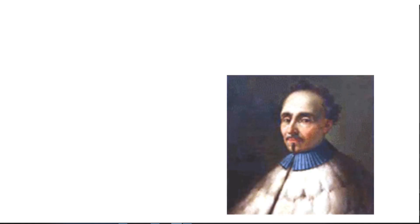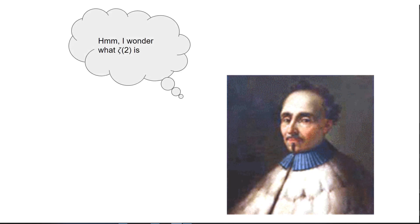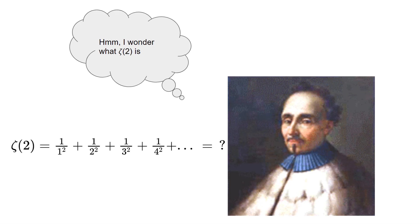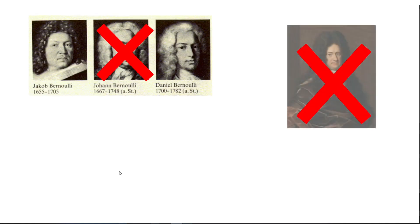Back in 1650, a mathematician named Pietro Mongoli posed a problem. He wanted to know the exact value of zeta of 2 — in other words, what is the exact sum of the reciprocal of the squares of all natural numbers? This was called the Basel problem. The solution eluded some of the greatest mathematicians at the time, such as the Bernoulli family, Leibniz, and John Wallis.